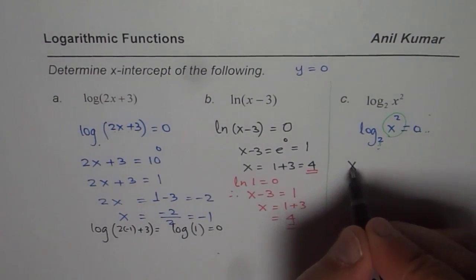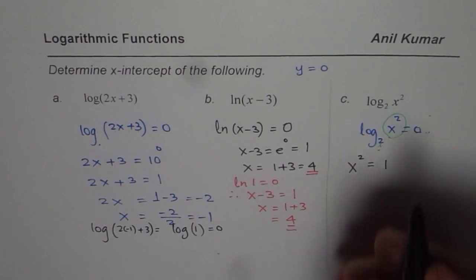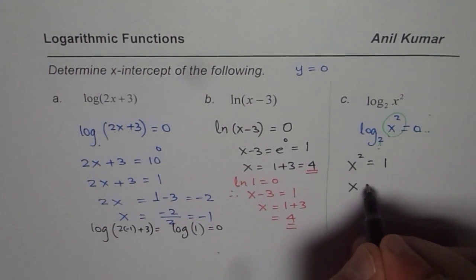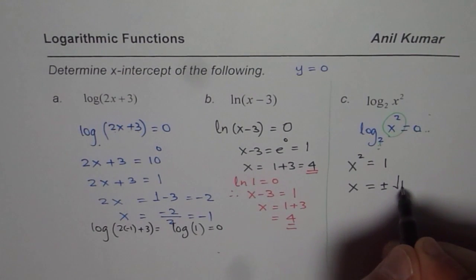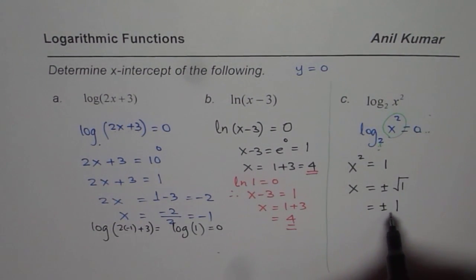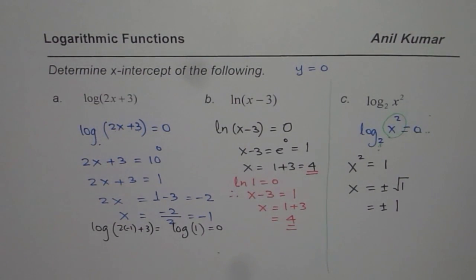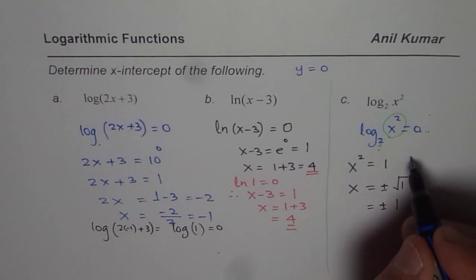We will say x squared equals 1 provides us the solution for x intercept. Now what values? In this case, we get plus minus square root of 1 and that is plus minus 1. For 2 values of x, this function is having x intercepts. That is interesting.